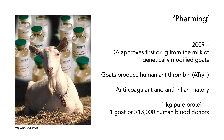One of the reasons why people might want to make animals that contain genes from other organisms is for farming. In 2009, the FDA, the organization in the United States that regulates drugs, approved the first drug from the milk of genetically modified goats. This goat produces human antithrombin, which is an anticoagulant and anti-inflammatory needed for some people who have a particular blood disorder.